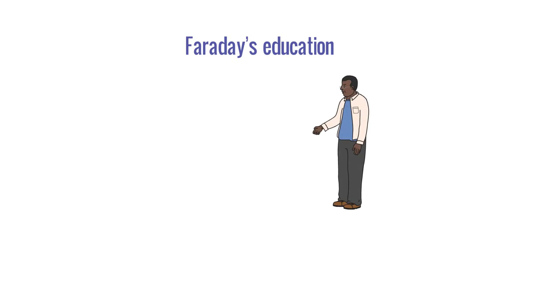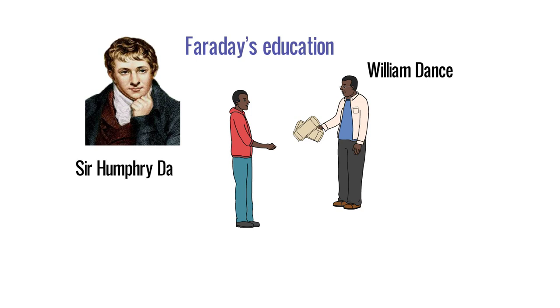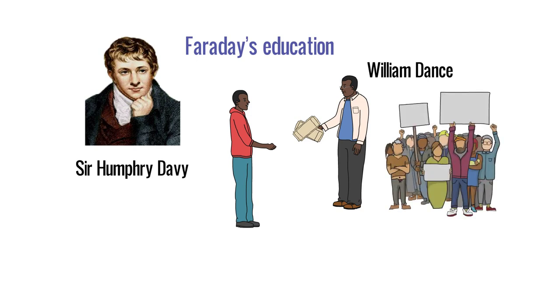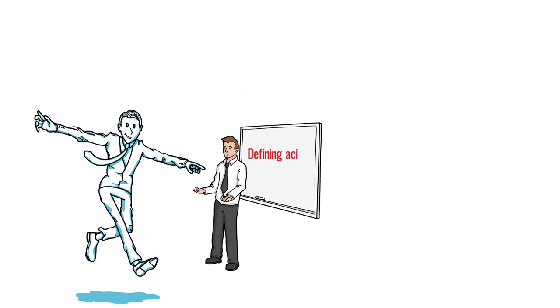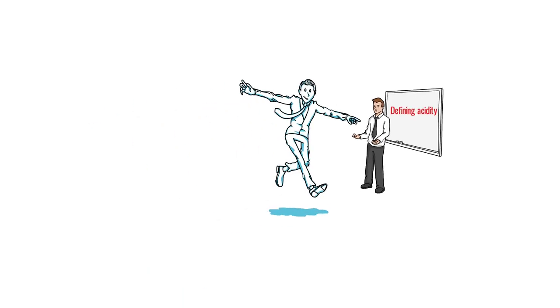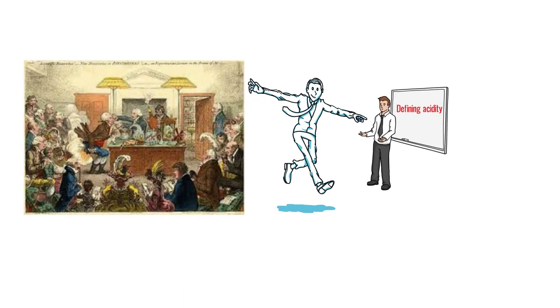When William Dance, a customer of the bookshop, asked if he would like a ticket to hear Sir Humphry Davy lecturing at the Royal Institution. Sir Humphry Davy was one of the most famous scientists in the world. Faraday jumped at the chance and attended four lectures about one of the newest problems in chemistry about defining acidity. He watched Davy perform experiments at the lectures.